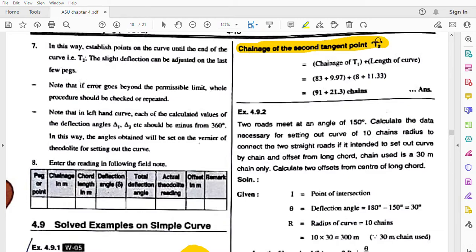So chainage of the second tangent point equals chainage of T1 plus length of curve. Adding these two gives us the chainage of second tangent point T2.